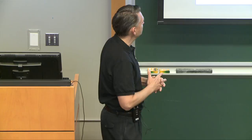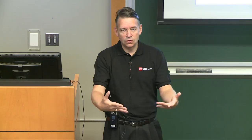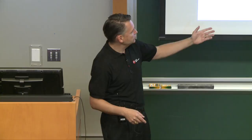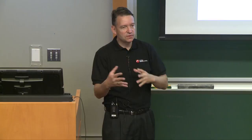Step three: generate the scores. The key thing — maybe the most important aspect of the Pugh matrix — is that you always use a datum, a reference. One of the alternatives is your reference, and you always compare every other alternative against the datum, asking for each criterion: is it better, about the same, or worse than the reference? You don't do pairwise comparisons of all alternatives against each other — always compare against the datum. Then you compute the total scores. Variations exist: instead of just better/equal/worse, you could use a five-point scale — much better, a little better, about the same, and so on.